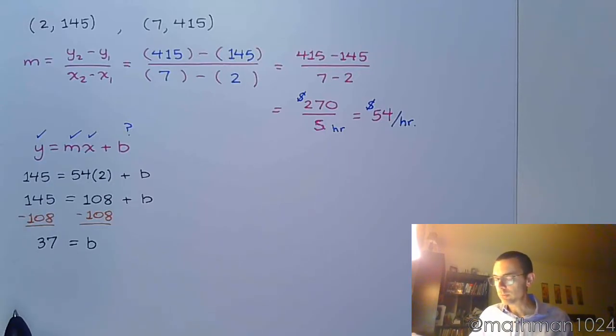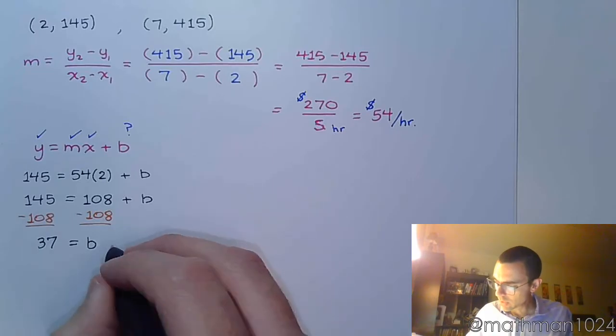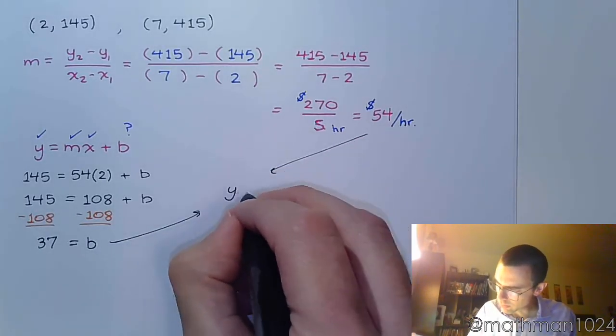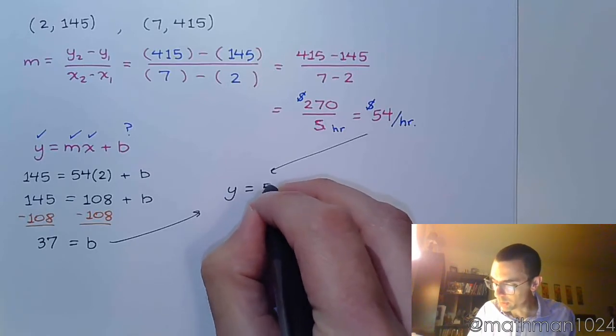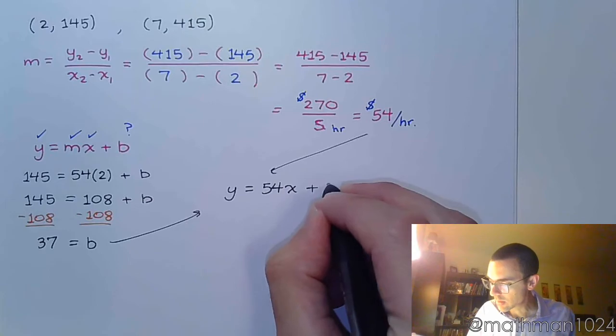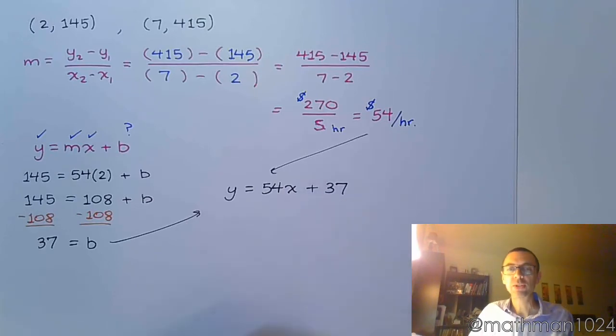All right, so you've got your slope. You've got your, why do I keep saying this to my slope? You've got your b, you've got your slope. Let's put these guys together.